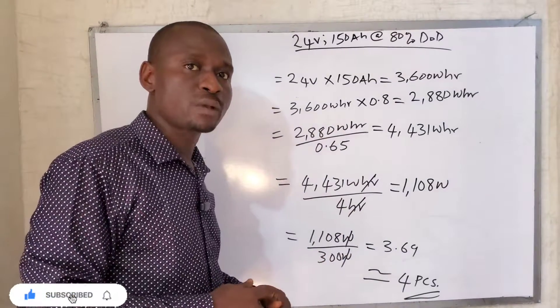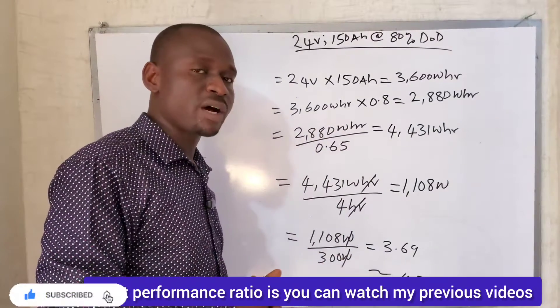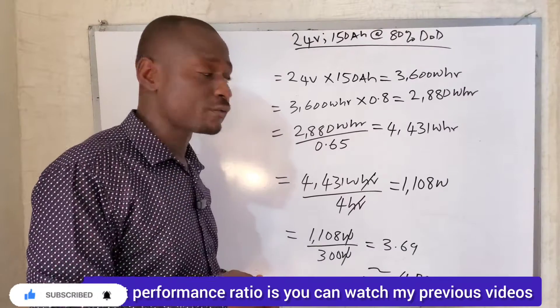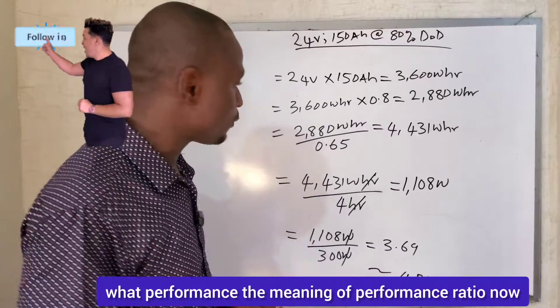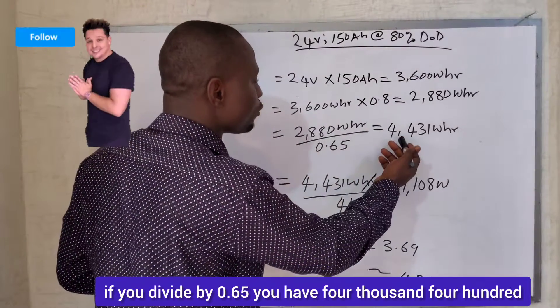If you don't know what performance ratio is, you can watch my previous videos where I explain the meaning of performance ratio. Now if you divide by 0.65, you have 4,431 watt-hours.